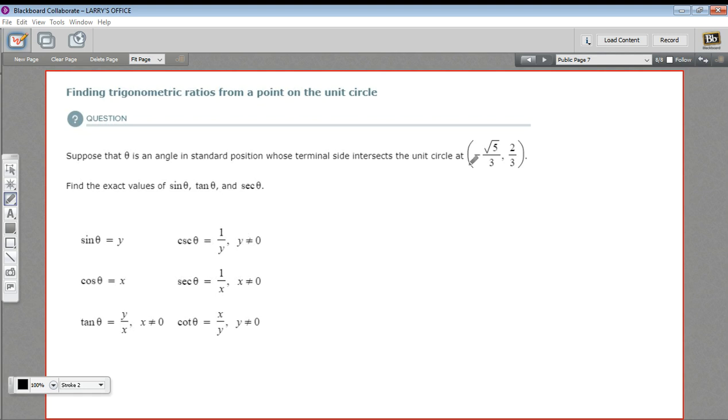In this problem, we're given this point, negative square root of five over three, two-thirds. And we want to find the sine, the tangent, and the secant. So let's see how that goes. Sine is easy. Sine is just the y value. So the sine of theta is two-thirds. Not too tough there.